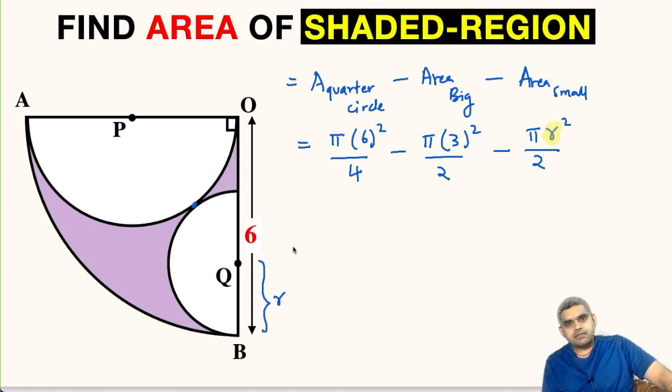For that, let us do one modification. We will join point P and Q. This PQ line segment will pass through this common point, which is the point of contact between these two semicircles. Let us name this point as M.